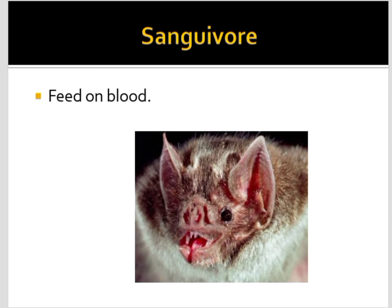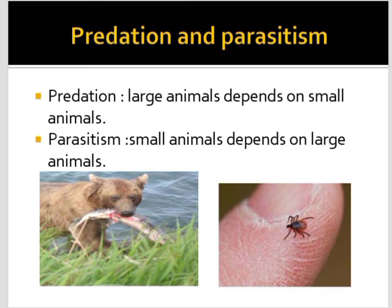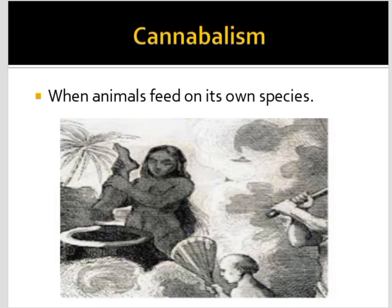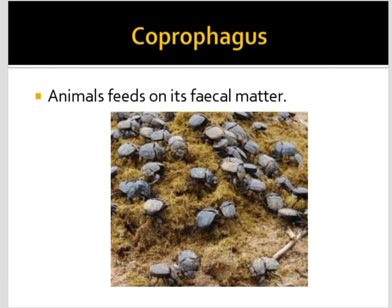Now let us learn about predation and parasitism. In predation, large animals depend on smaller animals — the prey. In parasitism, small animals depend on larger ones. Cannibalism means when animals feed on their own species.